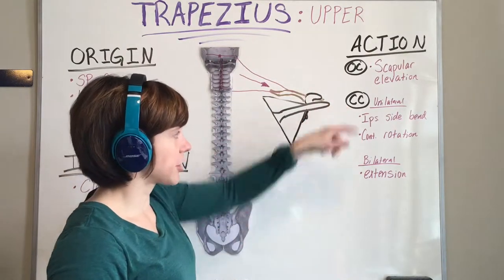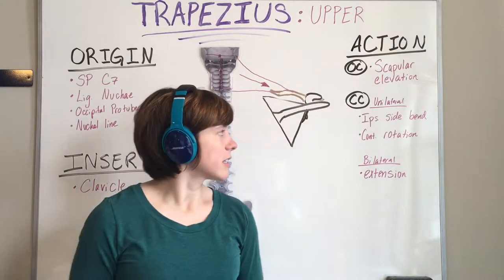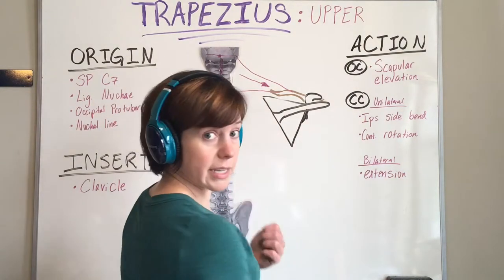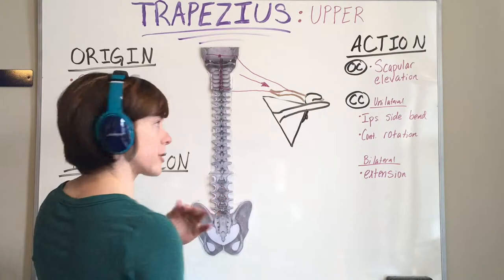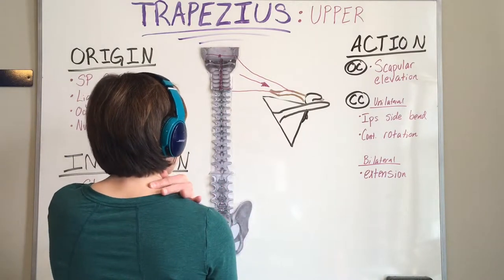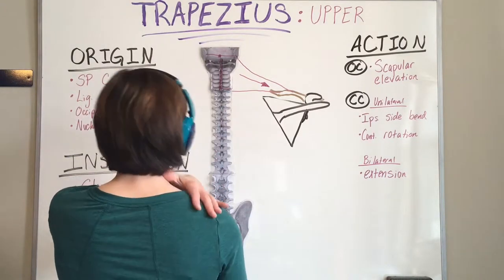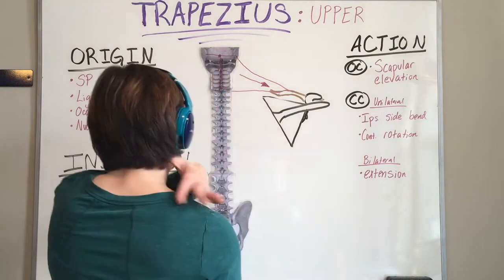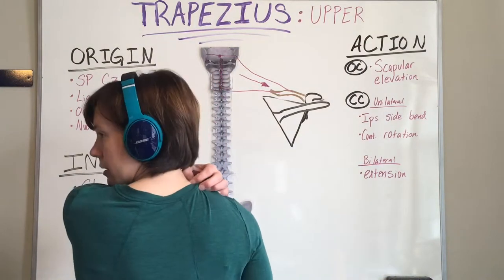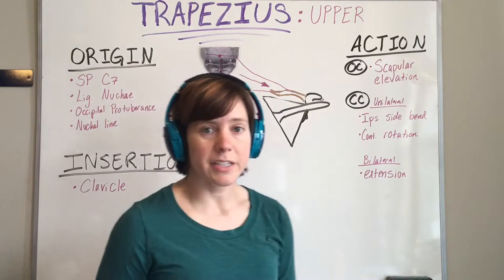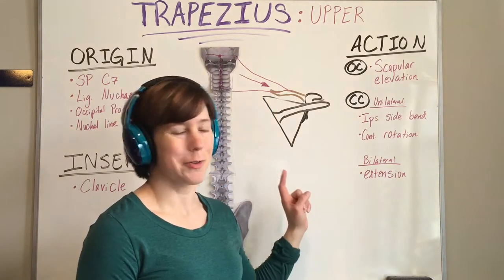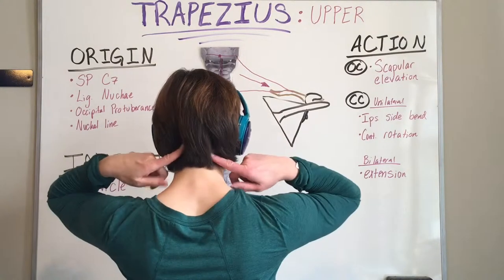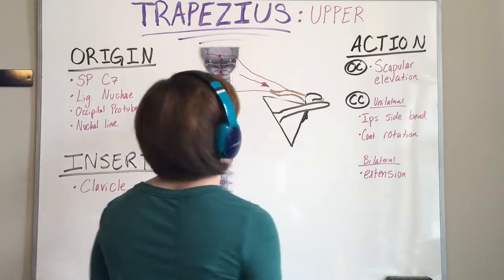The closed chain action of the upper trapezius is ipsilateral side bending. Ipsilateral means same side, and mimicking the picture here, ipsilateral side bend of the head and neck, and then contralateral rotation. Contralateral meaning opposite, so contralateral rotation means like that. Finally, it has a closed chain action of bilateral extension of the head and neck, so both sides working at the same time will help to extend the head and neck.